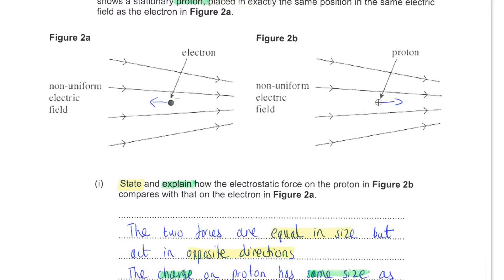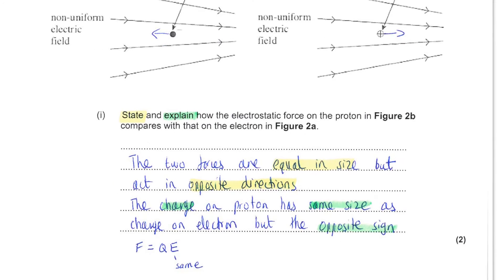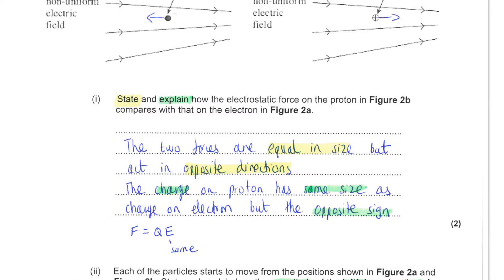Next, we have two diagrams which show a stationary electron in a non-uniform field this time, and the second diagram shows a stationary proton in exactly the same field and position. You are asked to state and explain how the electrostatic force on the proton compares with that on the electron. The electrostatic force equals the charge times the electric field strength. The charge on a proton is the same size as the charge on an electron but has the opposite sign. This leads to the final outcome that the two forces must be equal in size but act in opposite directions.